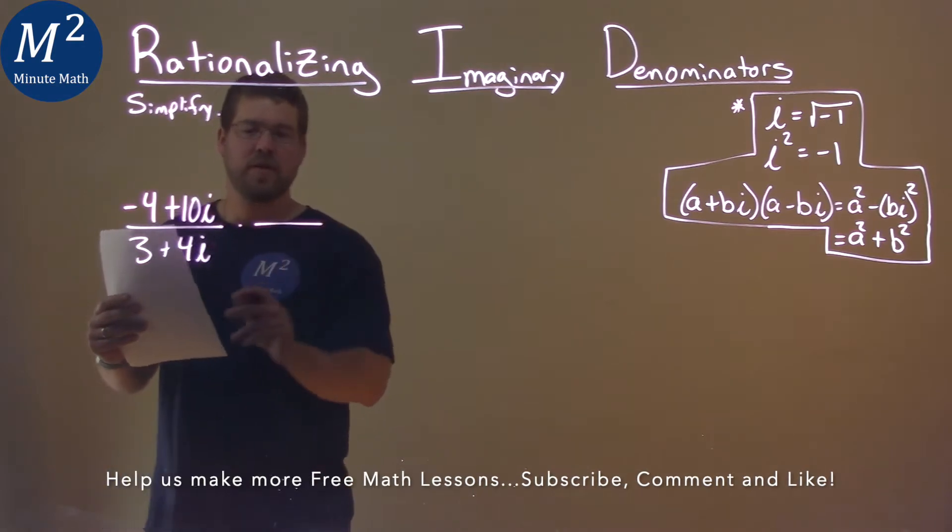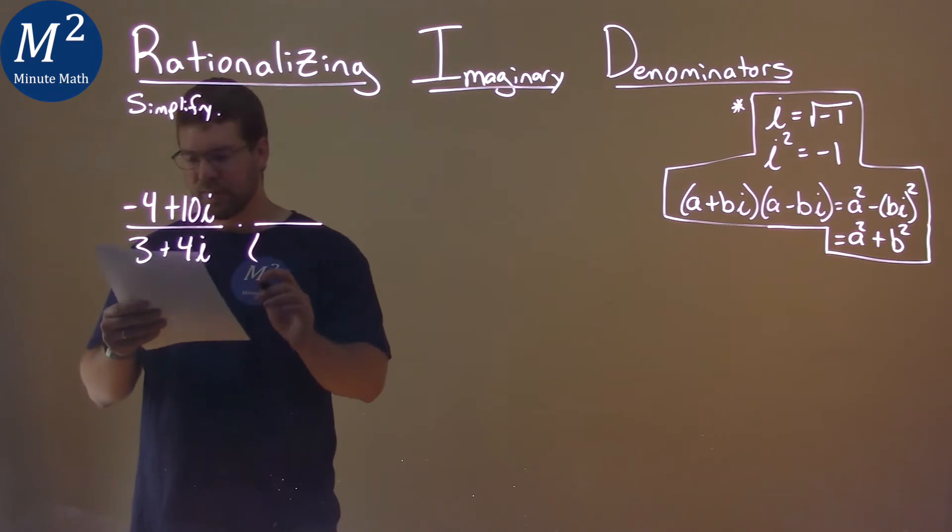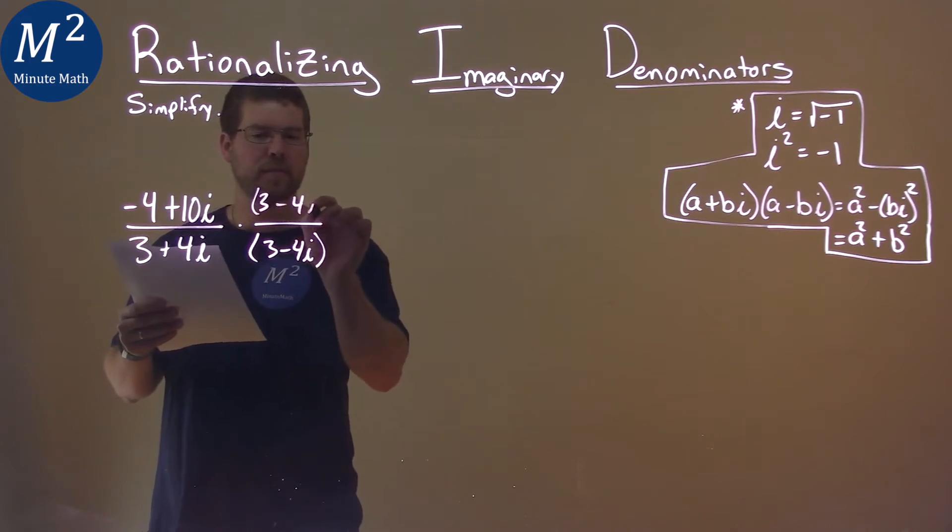First step is always look at the denominator, and we're going to try to get the i out. So we're going to multiply this by its complex conjugate, which is 3 minus 4i, and do the same thing on the numerator, 3 minus 4i.